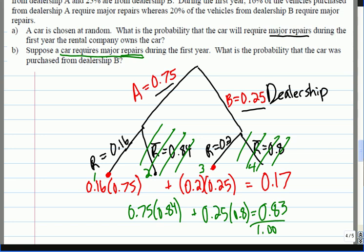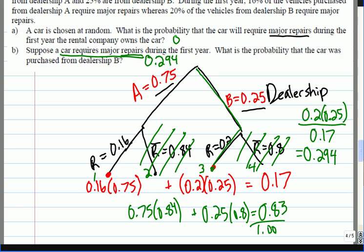Yeah, if it's going to come from dealership B and need repairs, that means this is the branch here. So my answer is going to be 0.2 times 0.25 divided by what we've already calculated, 0.17. So that's about 29.4%.